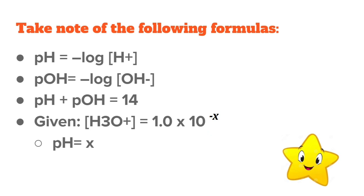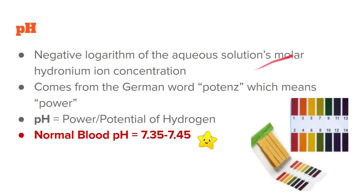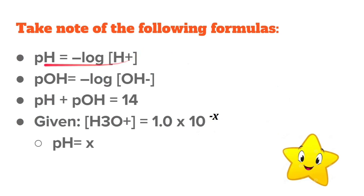Take note of the following formula — please memorize it. pH is equals to the negative logarithm of hydrogen ion (H+ or H3O+). This is the first formula that you need to remember. This formula actually answers the definition of pH: it is the negative logarithm of the aqueous solution's molar hydronium ion concentration. pH = -log[H+].